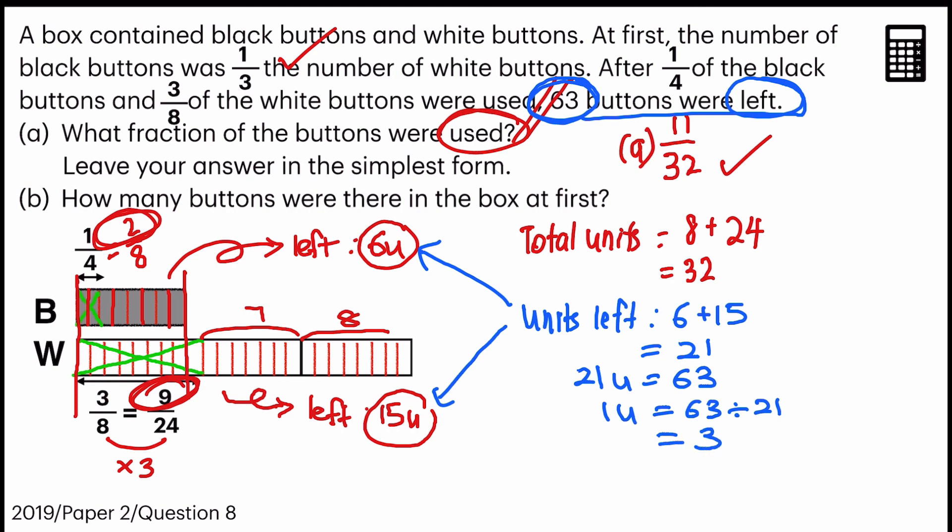Now with that, we already know the total units is 32. So we can find the final answer by taking 32 units multiplied by 3, giving us 96. So for B, there are 96 buttons at first. And that's the final answer.